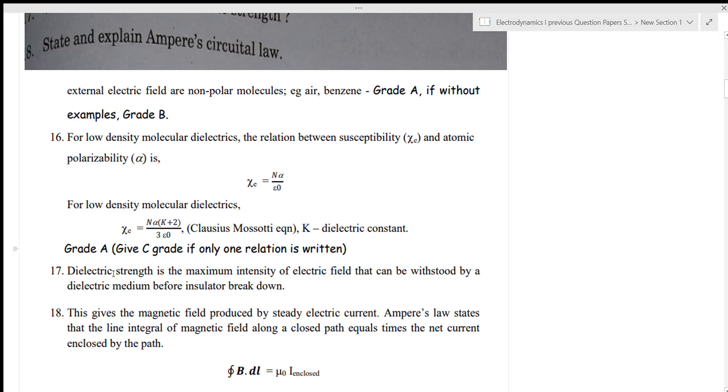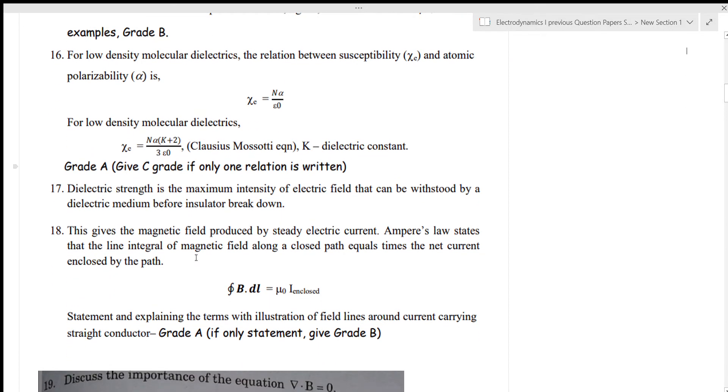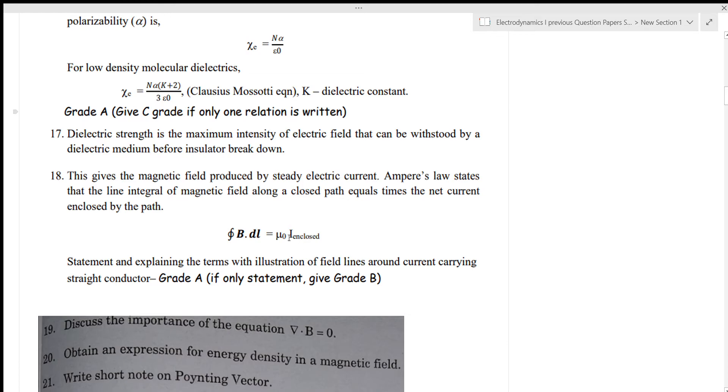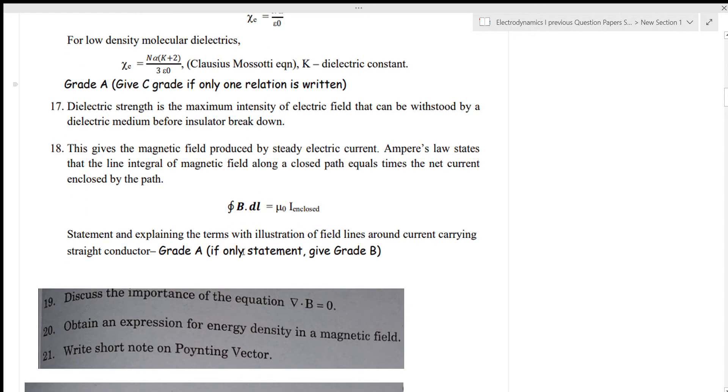State and explain Ampere's circuital law. The line integral of magnetic field along a closed path equals mu zero times the net current enclosed by that path.